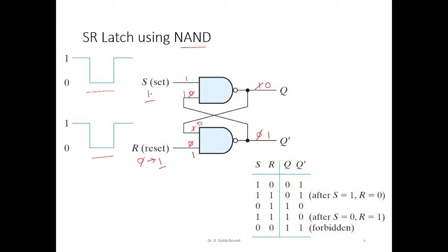Now suppose if we change S to 0 — that means I am trying to set the circuit, meaning Q should become 1 and Q bar should become 0. Now this 0 comes here, and 1 and 0 is 0, NOT of 0 is going to be 1, and that 1 comes here. 1 and 1 and 1 is 1, NOT of 1 is going to be 0, and this 0 comes here, so 0 and 0 is 0, NOT of 0 is going to be 1. The output has stabilized and we have set the circuit to 1 by setting S equal to 0.